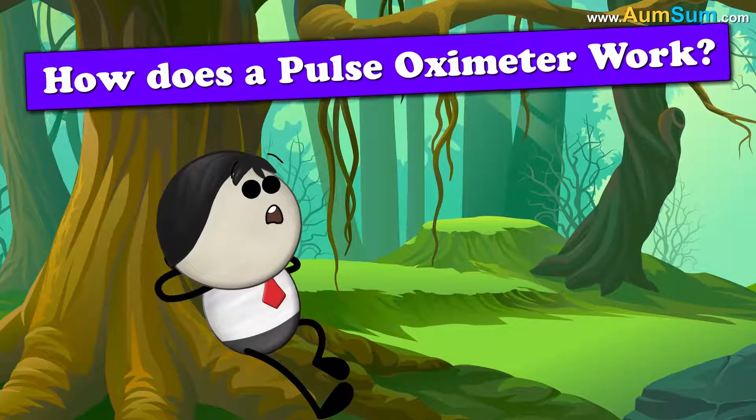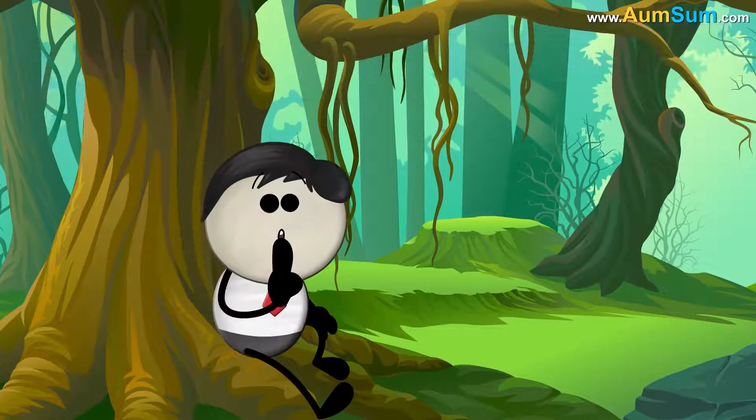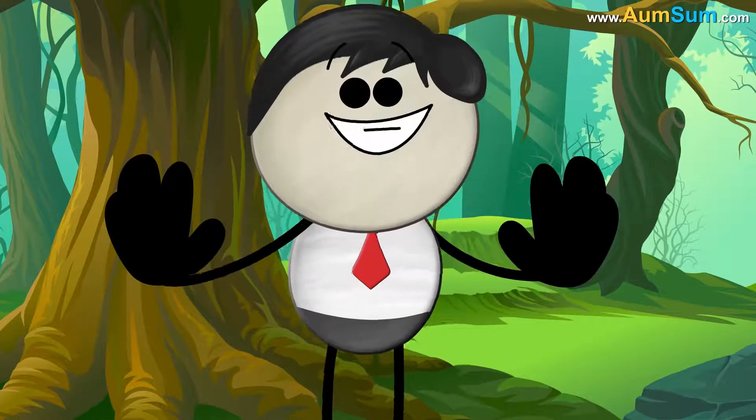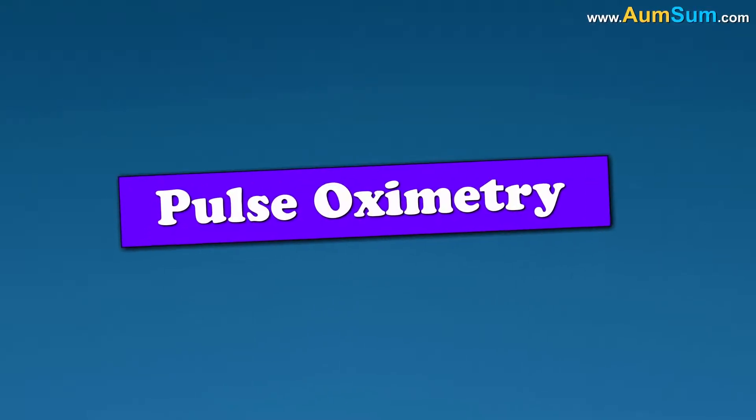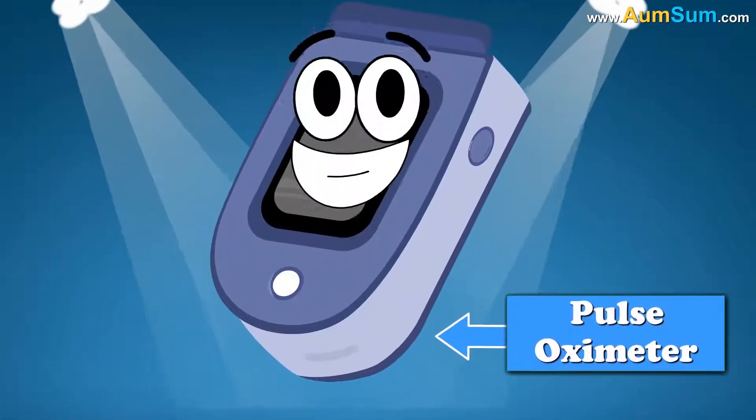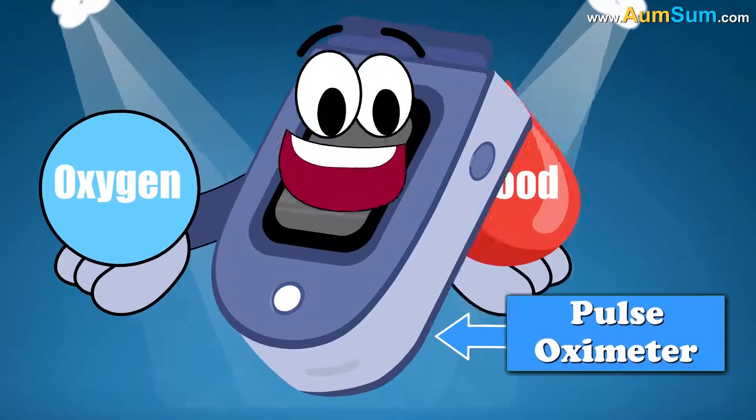How does a pulse oximeter work? It is a secret. Oh AumSum. Pulse oximetry is a test carried out using a pulse oximeter. This test is used to measure the oxygen level in our blood.